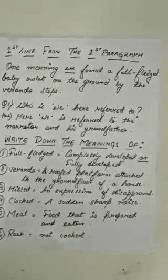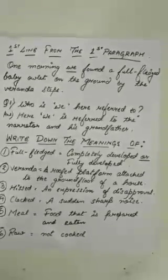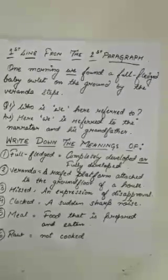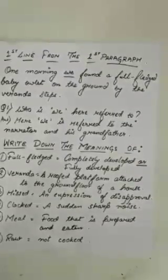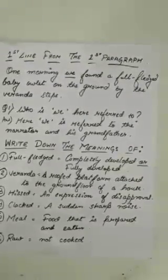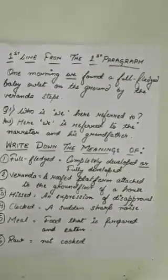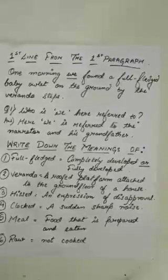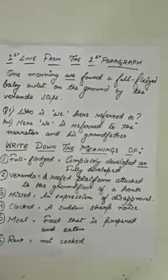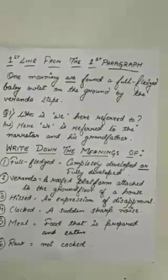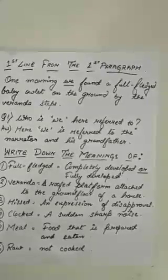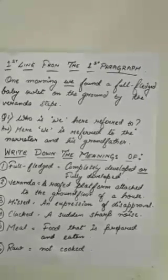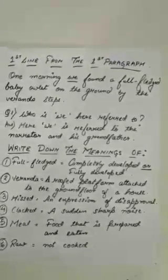Write down the meanings. No. 1: Full-fledged — completely developed or fully developed. No. 2: Veranda — a roofed platform attached to the ground floor of a house. No. 3: Hissed — an expression of disapproval. No. 4: Clack — a sudden sharp noise.